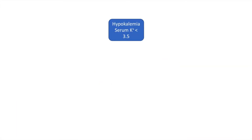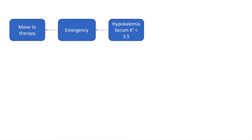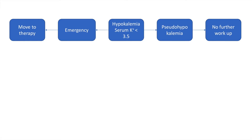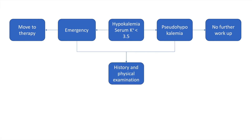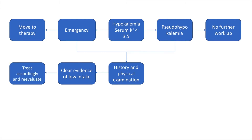A diagnostic approach to hypokalemia begins with establishing that the patient does in fact have a serum potassium of less than 3.5, following which we have to ascertain if the situation is an emergency. If it is an emergency we must move to therapy immediately. Although not routinely seen in clinical practice, we can also evaluate the patient for pseudo-hypokalemia, in which case no further workup will be required. A detailed history and physical examination is invaluable, and if there is clear evidence of low intake or a transcellular shift, we can treat and evaluate accordingly.